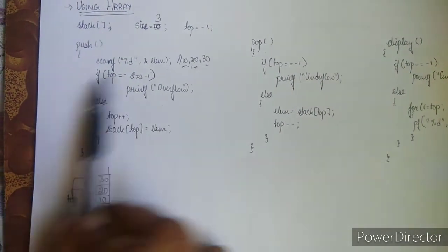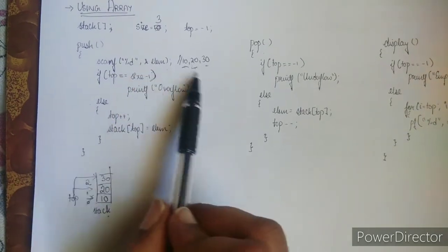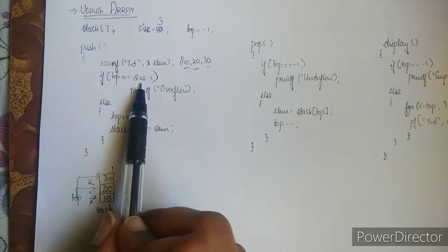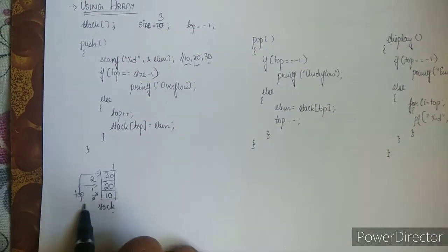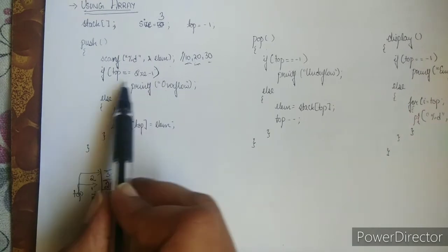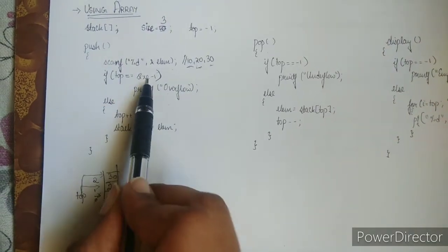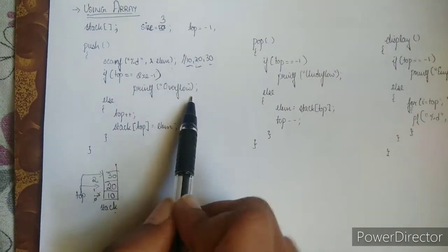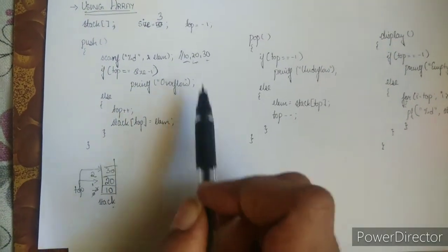Now let's try to insert the next element. If top equals size minus 1: top is 2 and size minus 1 is 2 — this condition is met, so we print overflow. That's the push operation.